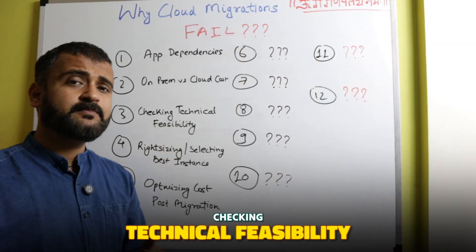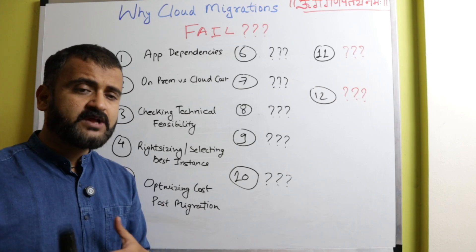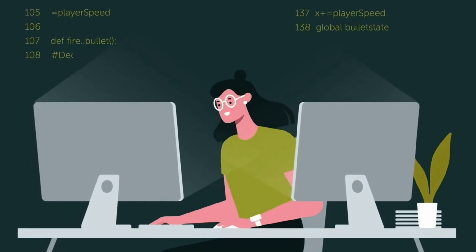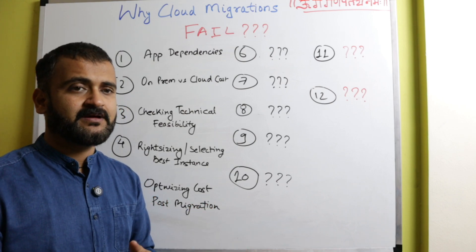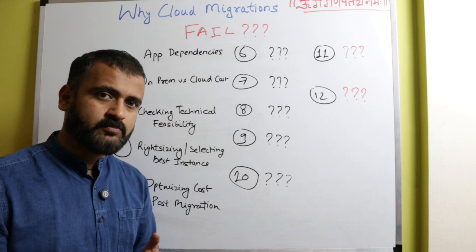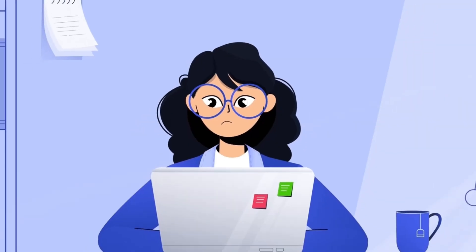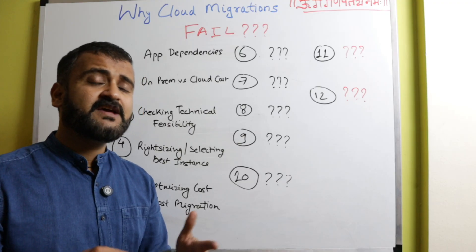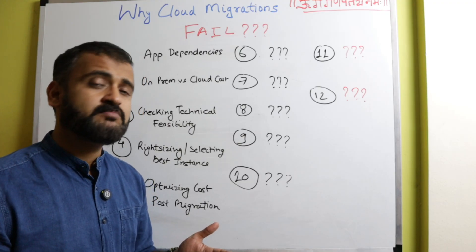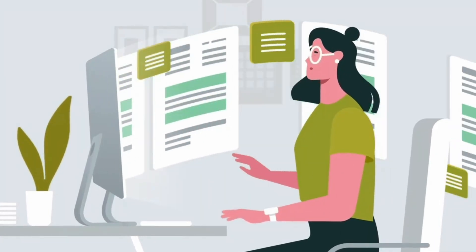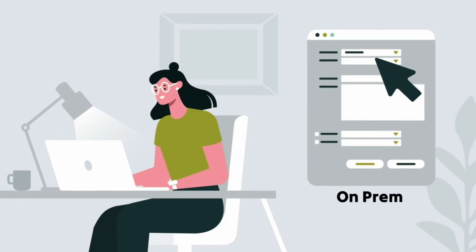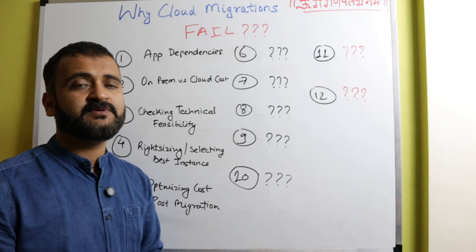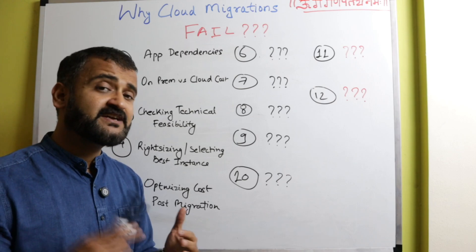Technical feasibility is also a very prominent factor, because most of the time we are not able to understand the technical challenges a particular application could have. We assume that we could just migrate the application as-is and it won't have any problem, but later on you might have dependencies or constraints which you had not accounted for. That's why you have to check if an application is actually fit for cloud — it might happen that a particular application does not deserve to be on cloud and is well enough to maintain on-prem. You have to check the technical feasibility and supportability of the application and its dependencies.